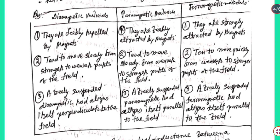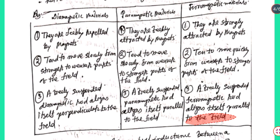A freely suspended diamagnetic rod aligns itself perpendicular to the field. A freely suspended paramagnetic rod aligns itself parallel to the field. Similarly, a freely suspended ferromagnetic rod also aligns itself parallel to the field.